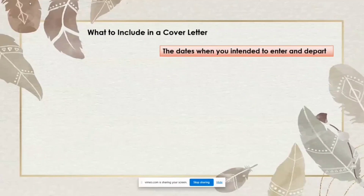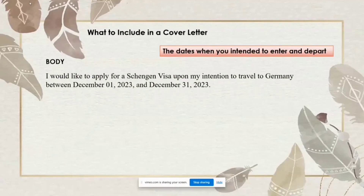Now we move to the body of your cover letter. The first sentence or paragraph should include the dates when you intend to enter and depart. For example, I wrote: 'I would like to apply for a Schengen visa upon my intention to travel to Germany between December 1, 2023 and December 31, 2023.'